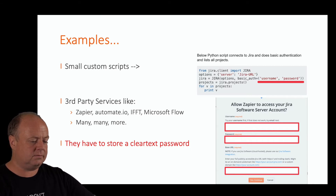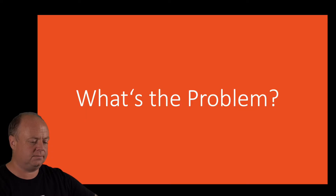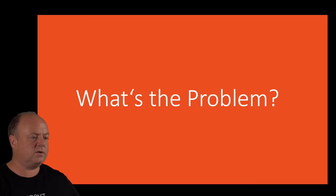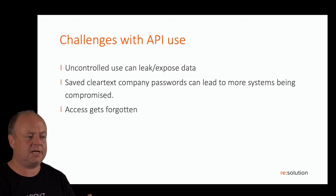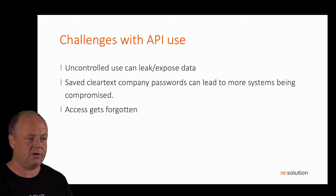So what's the problem with that? First of all, uncontrolled API usage can leak and expose your data. If you don't know which other services people have connected to your Jira, you actually don't know where your data flows.